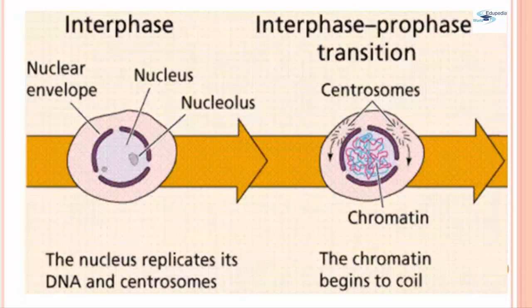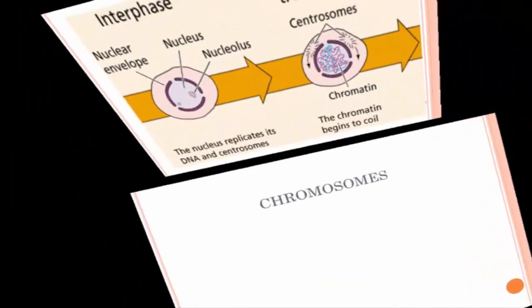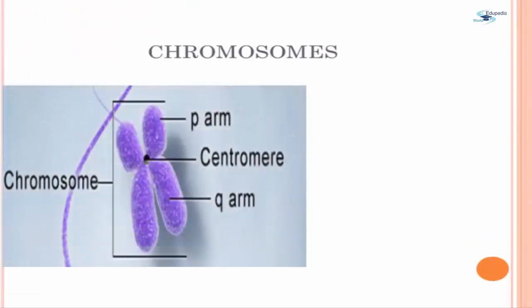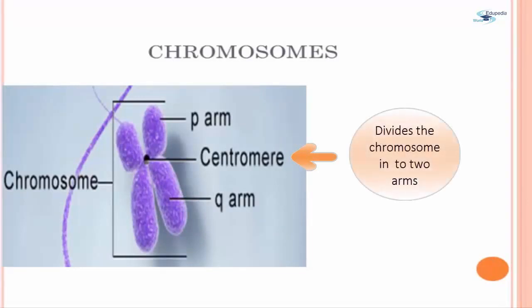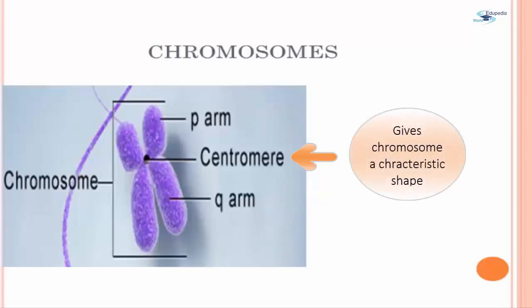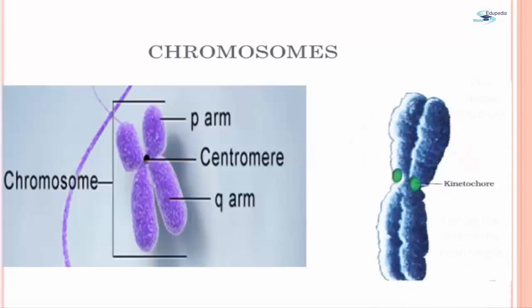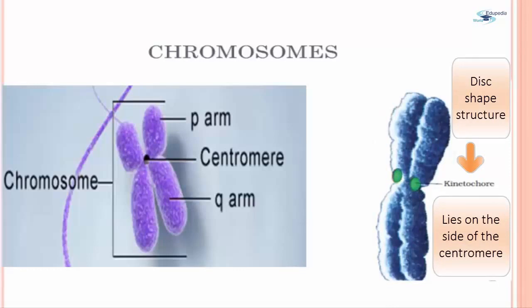When the cell starts dividing, several transitions take place. Chromatin condenses to form chromosomes. Each chromosome has a constriction point called the centromere, which divides the chromosome into two arms. The short arm of the chromosome is labelled as the p-arm and the long arm as the q-arm. The location of the centromere on each chromosome gives it its characteristic shape. The centromere can be used to describe the location of a specific gene. On either side of the centromere lies a disc-shaped structure called the kinetochore.